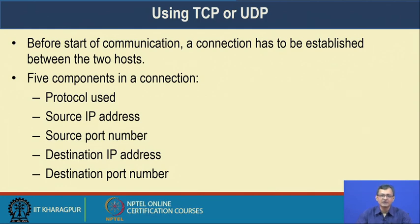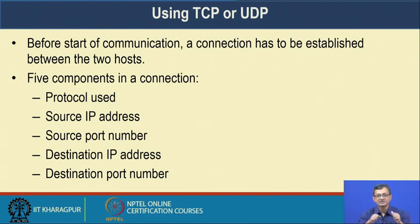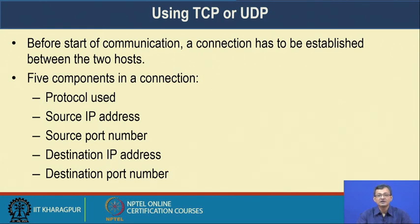Whether to use TCP or UDP depends on the application's requirement. Before communication starts, a connection must be established. It can be connection-oriented like FTP using TCP, or connectionless like DNS resolution using UDP. To establish a connection we require five things: IP of the server, port of the server where it is listening, IP of the client, and port of the client. To identify a system we require an IP address; to identify a process we require a port number. IP plus port together define the server process.